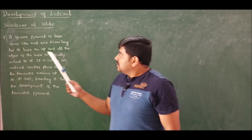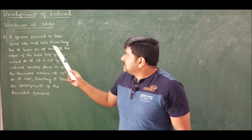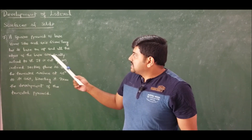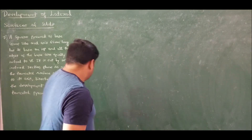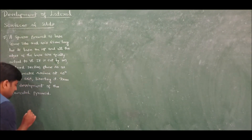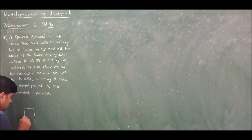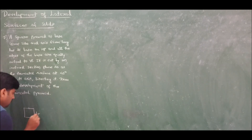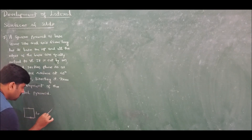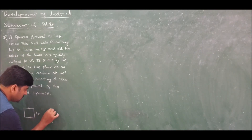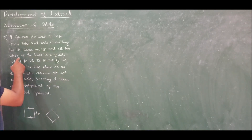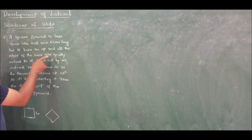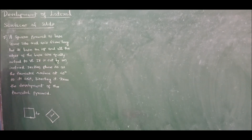We have a square pyramid of base side 40mm and axis length 65mm resting on HP with all base edges equally inclined to VP. If I draw a square with two sides parallel and two sides perpendicular to VP, not all sides will be equally inclined. If I draw it in the shape of a rhombus, I will get all sides equally inclined to VP. So I should go for the rhombus orientation.